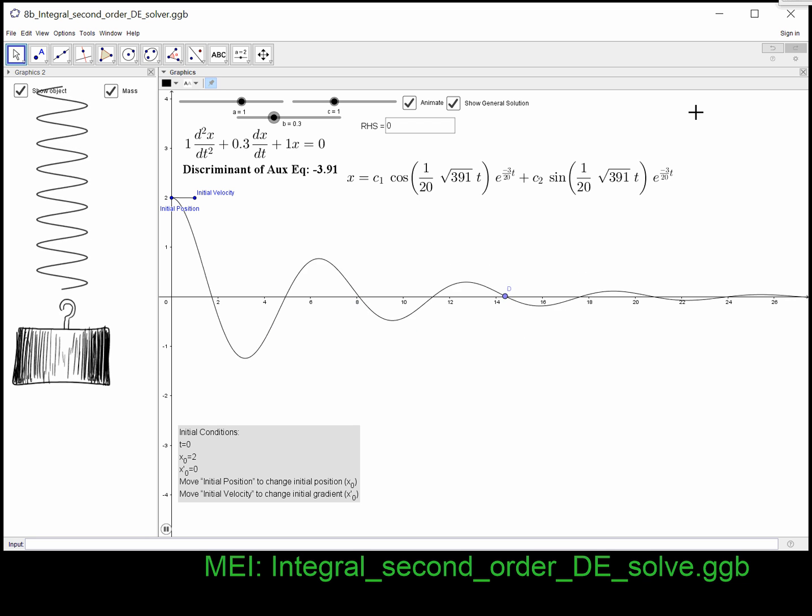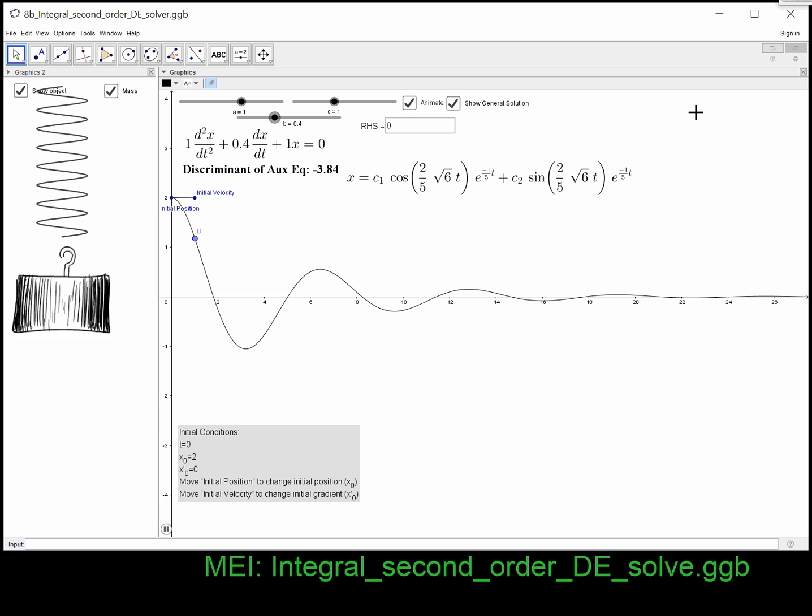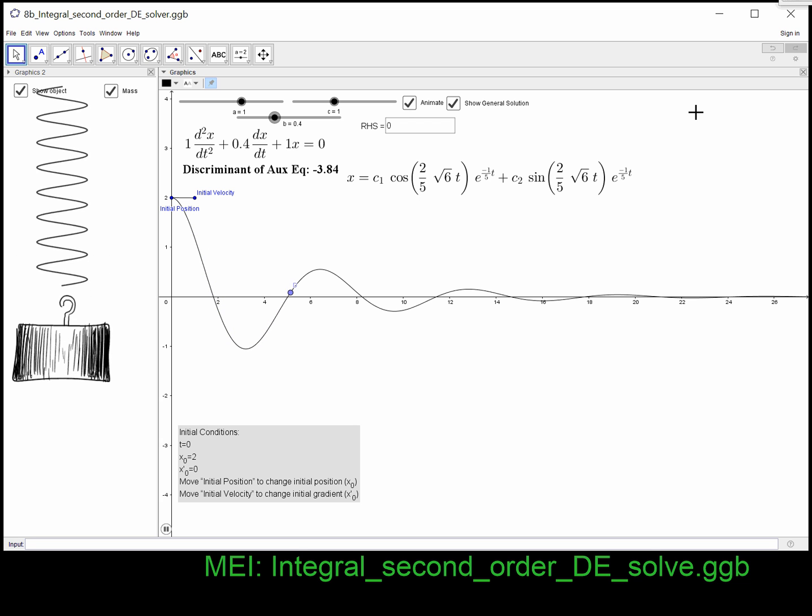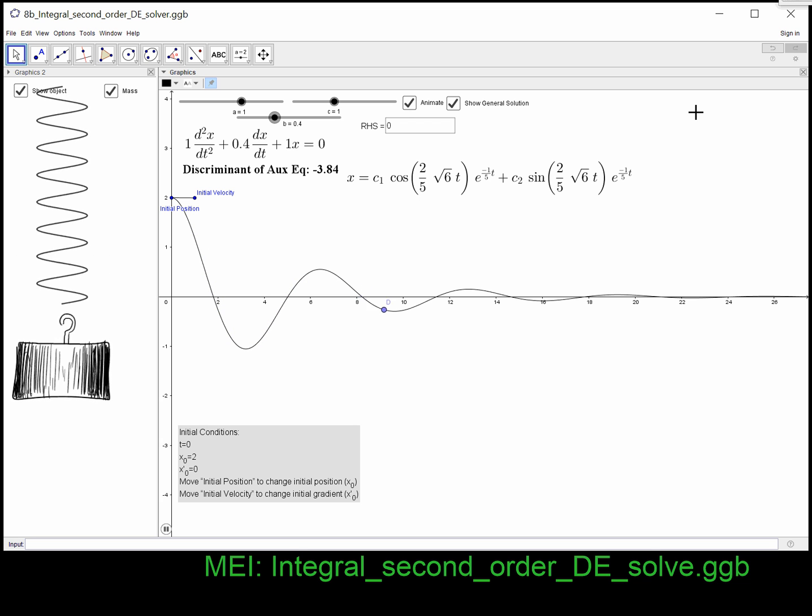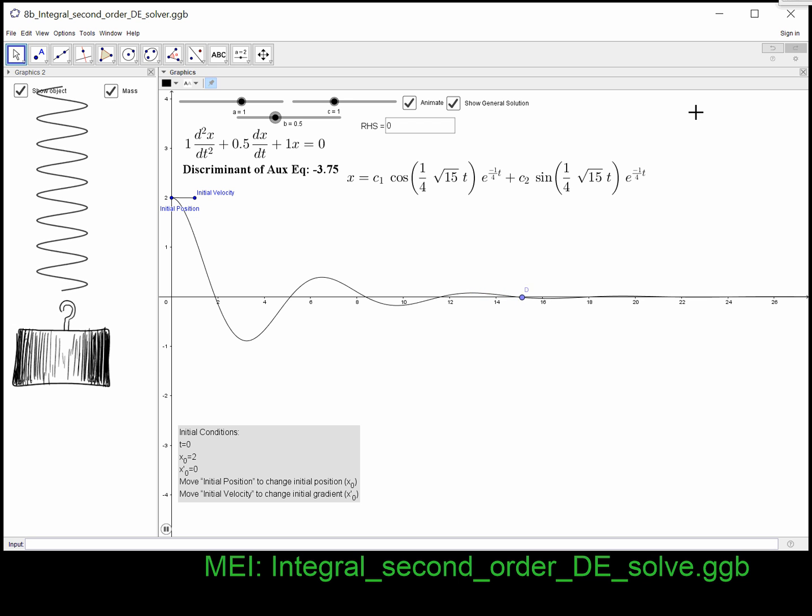So if I carry on increasing my B function, that's my K in effect, you can see that the vibration is now starting to damp out more quickly. I'm still getting my overshoot. I'm still going out to negative 1.